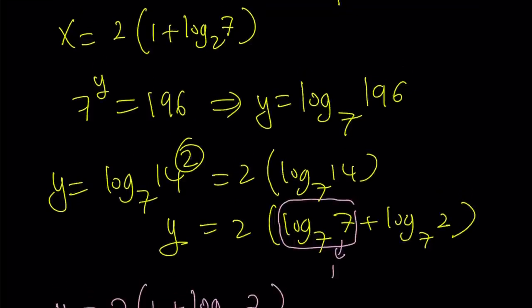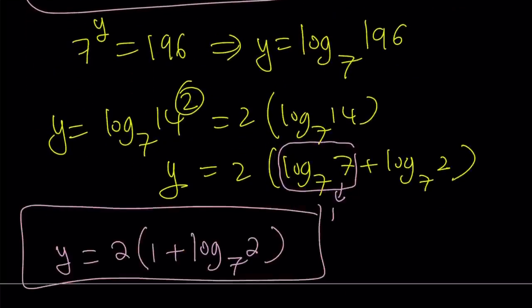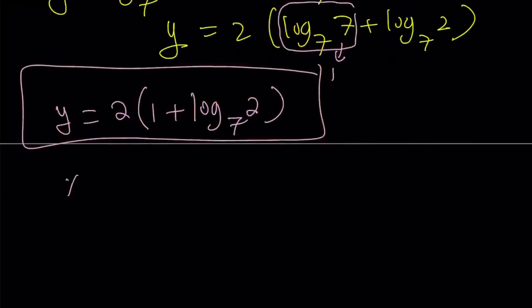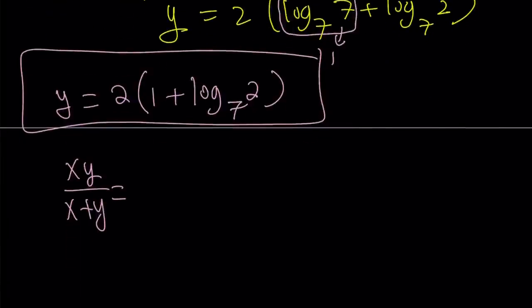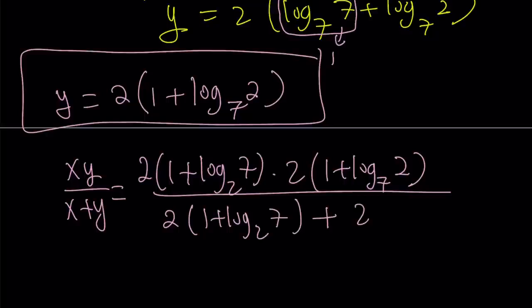Awesome. So, that is my x value. This is my x value. And this is my y value. And now, we're going to go ahead and plug it in. xy over x plus y. Now, what is x? What is y? Let's go ahead and plug it in. x is 2 times 1 plus log 7, base 2. And y is 2 times 1 plus log 2, base 7. And then, at the bottom, we're just going to add them. Okay. I'm going to simplify this next.